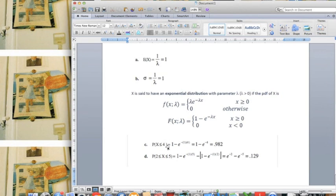So quite simple. This part C, the x smaller than 4 is here, 1 minus lambda times e to the power of negative lambda times x. So we get 0.982.